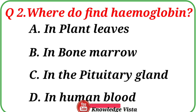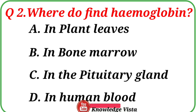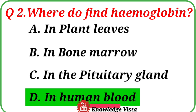Question number 2: Where do you find hemoglobin? Option A: In plant leaves. Option B: In bone marrow. Option C: In the pituitary gland. Option D: In human blood. The correct answer is option D, In human blood. Hemoglobin is a substance found in human blood.